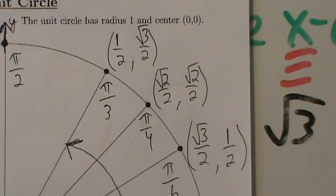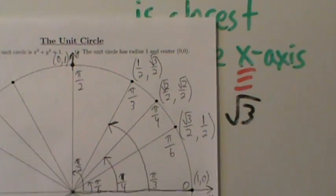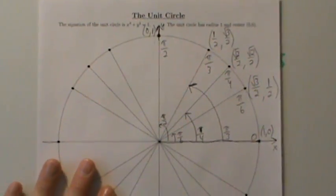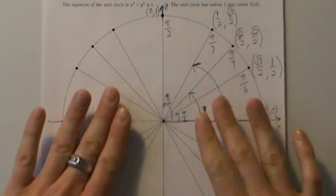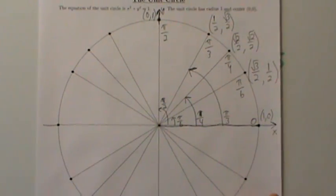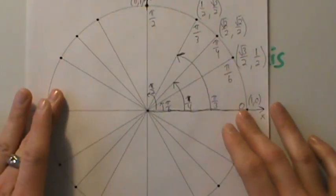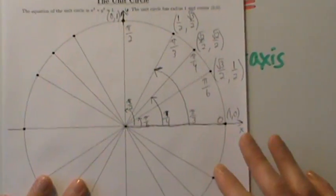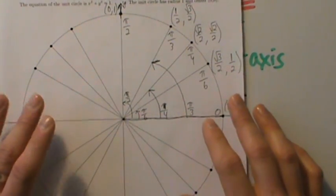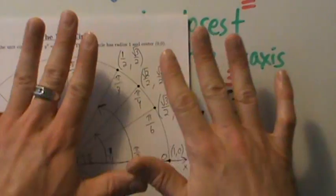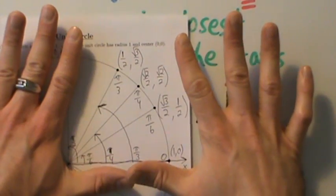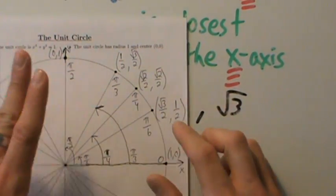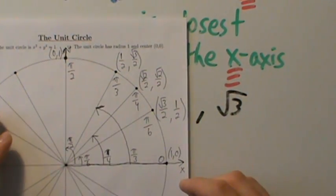It's a really good idea to memorize the first quadrant, because now that we have it, the rest is so much easier. If you try to memorize everything, it's a mess. But just memorize the first quadrant, and if you have trouble, use the tips we just talked about.